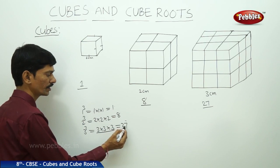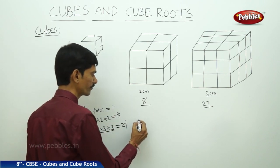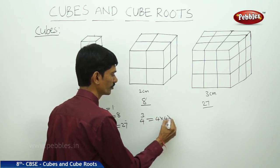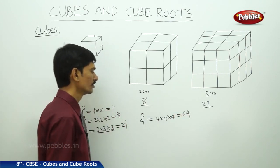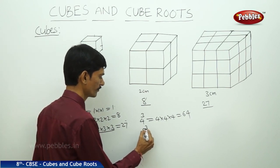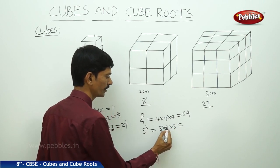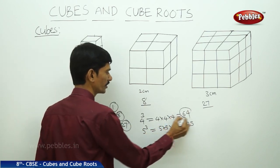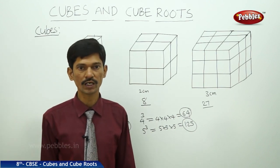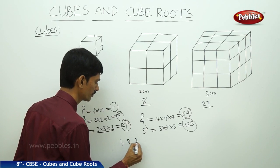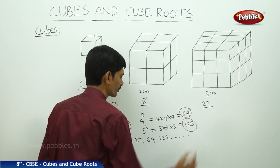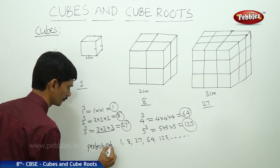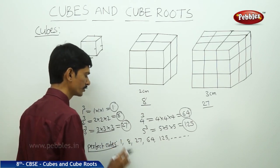Eight is called the cube of two, and twenty-seven is the cube of three. The cube of four is four times four times four, which equals sixty-four. The cube of five is five times five times five, which equals one hundred and twenty-five. So the numbers one, eight, twenty-seven, sixty-four, one hundred and twenty-five, and so on are known as perfect cubes or cube numbers — numbers whose cube root is a natural number.